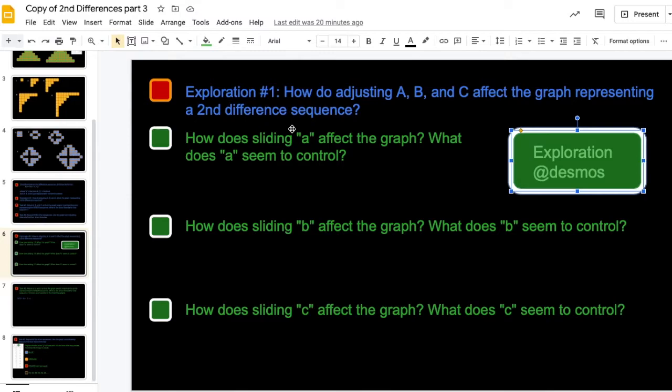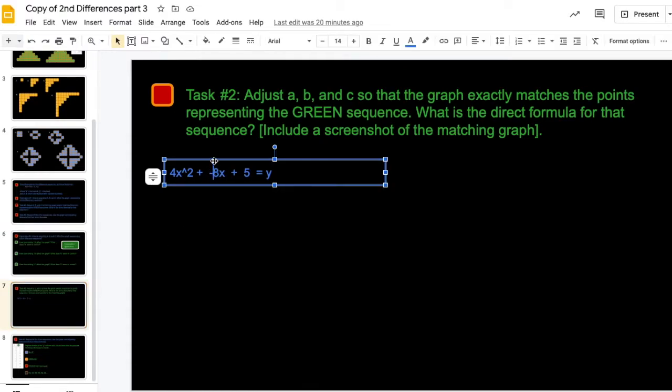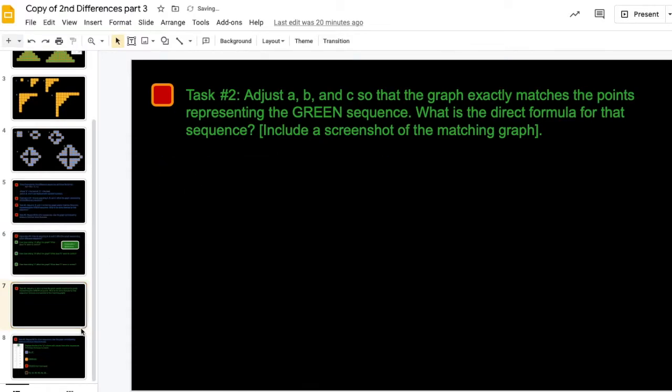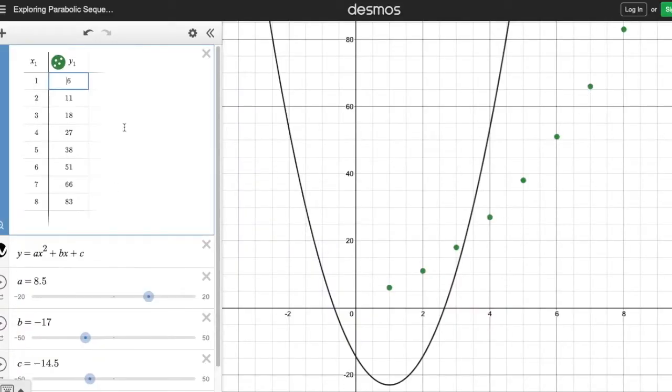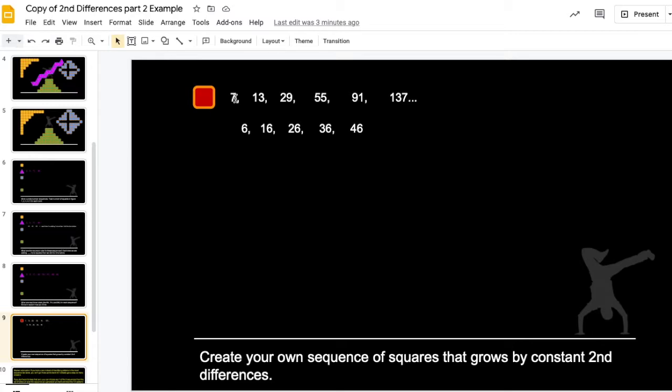All right, after you have an idea of what the different components of the formula do, then I want you to see if you can adjust the sliders A, B, and C, so that you can get the curve to perfectly line up with the green dots. Now, I don't want to do your work for you. So I'm going to delete this out. And I'll actually put in the sequence that we made up last week, or for part two example.